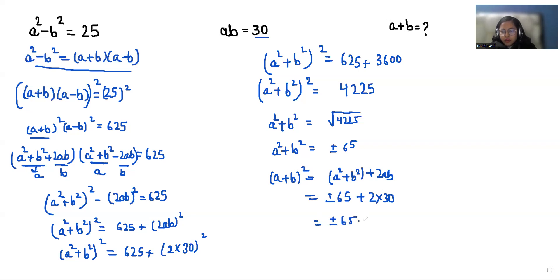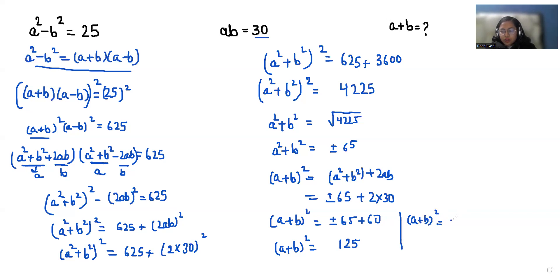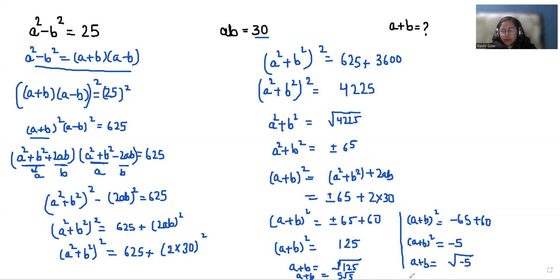So plus or minus 65 plus 60. So a plus b whole square: if I take the plus case first, 65 plus 60 is 125, and if we take the minus case, a plus b whole square is equals to minus 65 plus 60, which is minus 5. So if we are doing square root of 125, a plus b is 5 root 5. And in the minus case, the value of a plus b is square root of minus 5. So these are the two values.